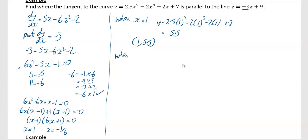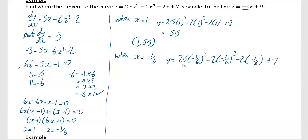The next one: when x equals minus 1/6, substitute into the same equation: y equals 2.5 times (minus 1/6) squared minus 2 times (minus 1/6) cubed minus 2 times (minus 1/6) plus 7. I definitely did this in my calculator — y equals 7 and 89 over 216. So your second point is (minus 1/6, 7 and 89/216) — not so pretty, but that's your answer.